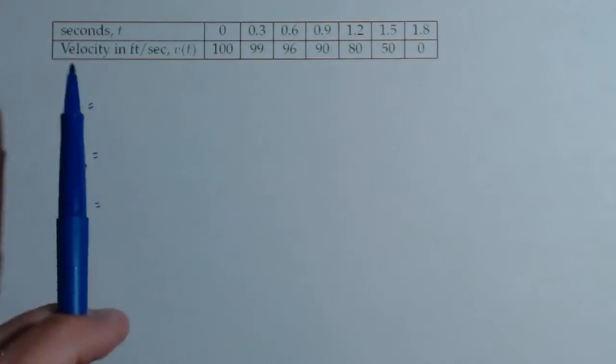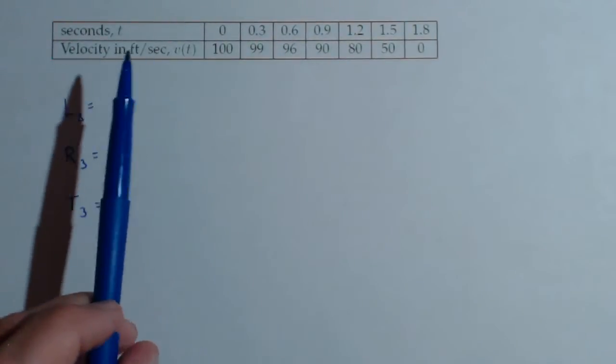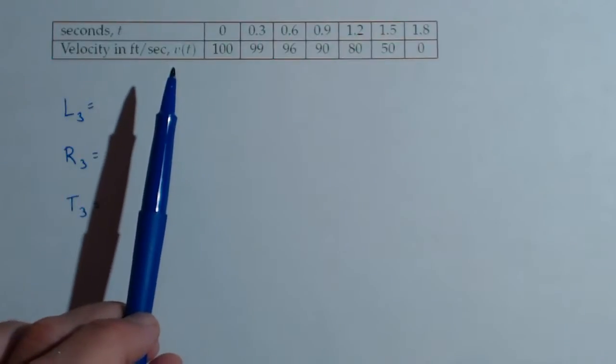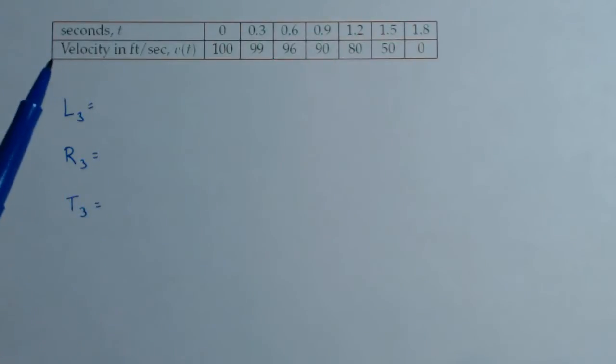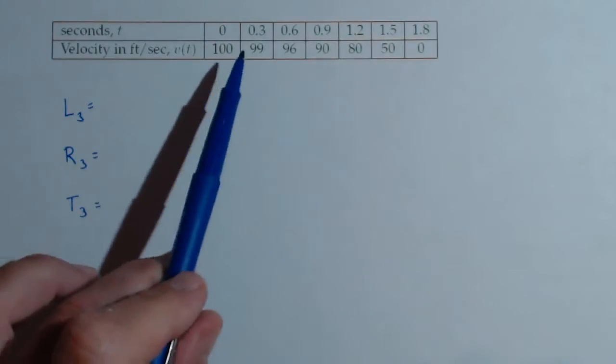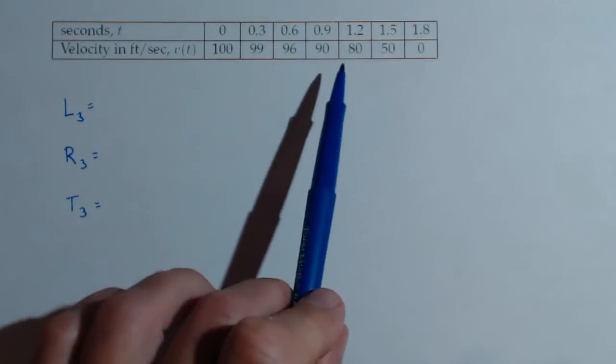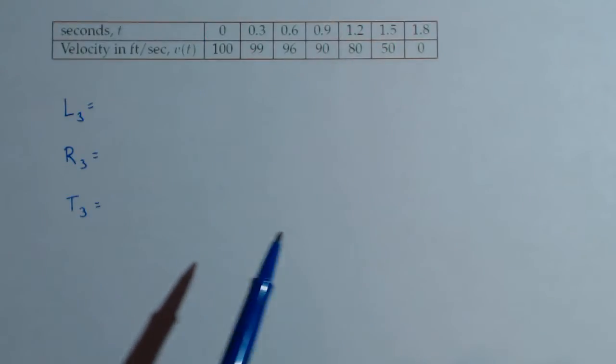In this video, we're given a table of data that gives time and the velocity of an object at those times, and we're going to assume that it's always decreasing consistently for this particular problem. So nowhere in here in between these times did it increase its velocity.